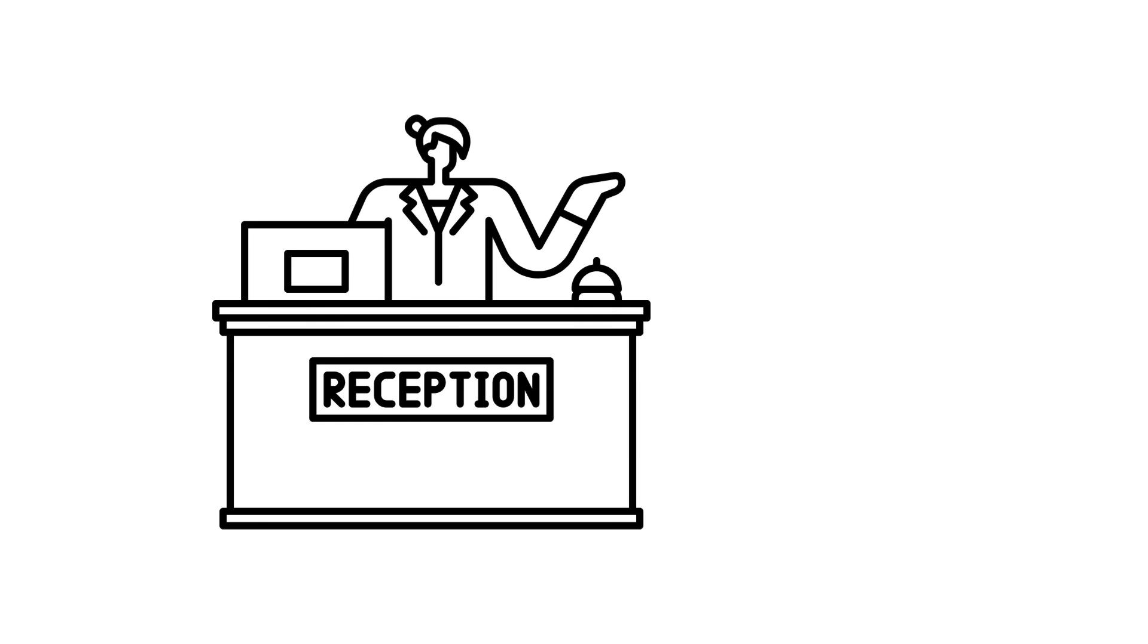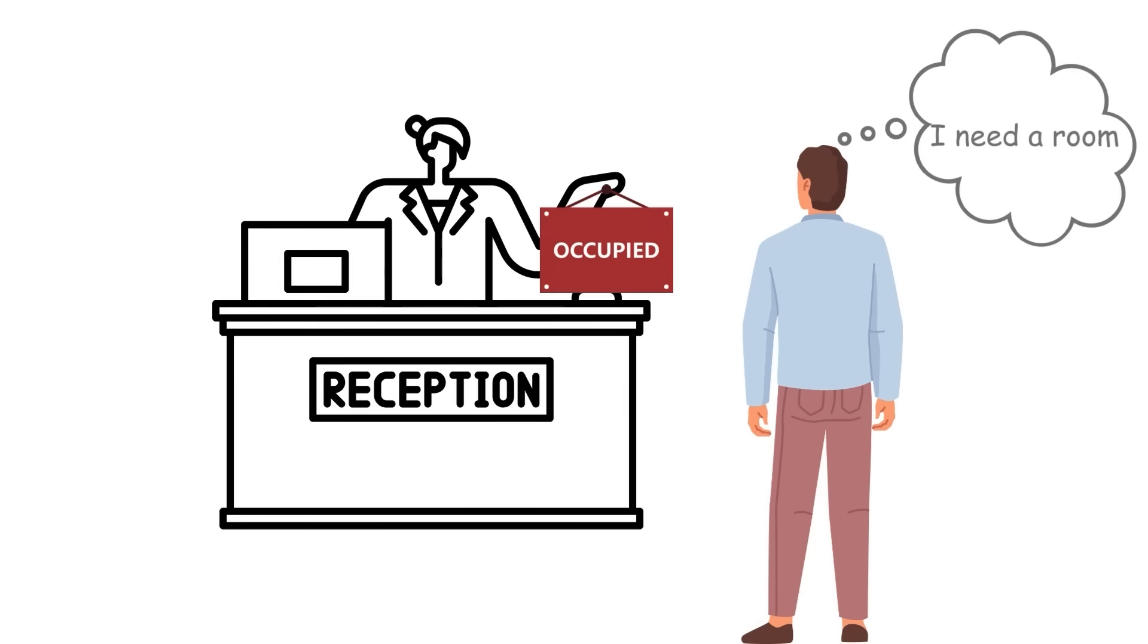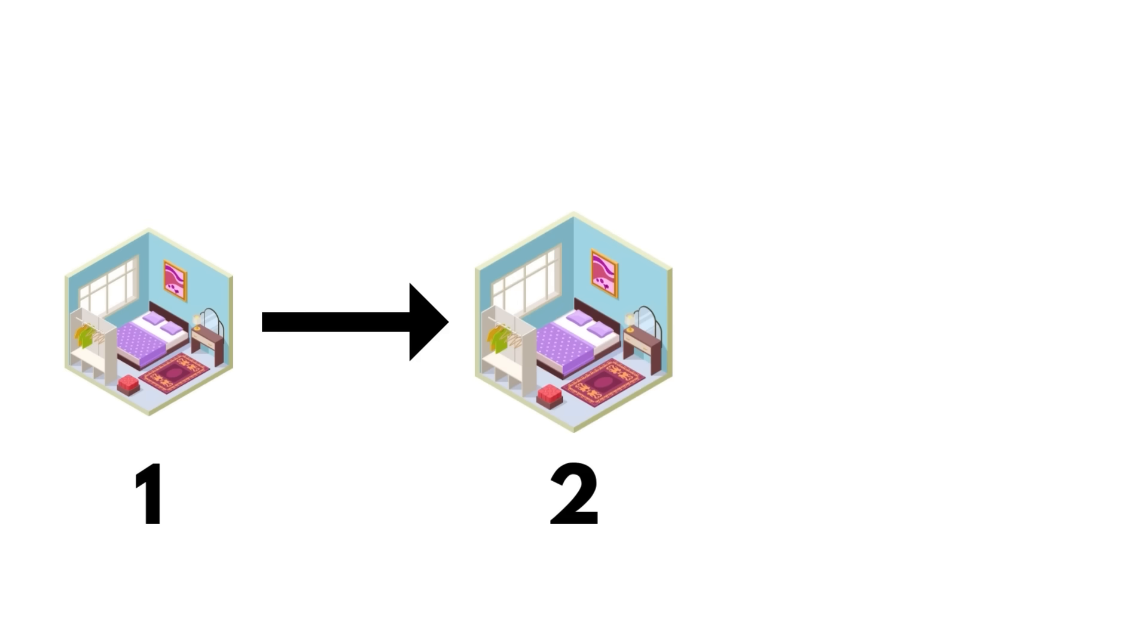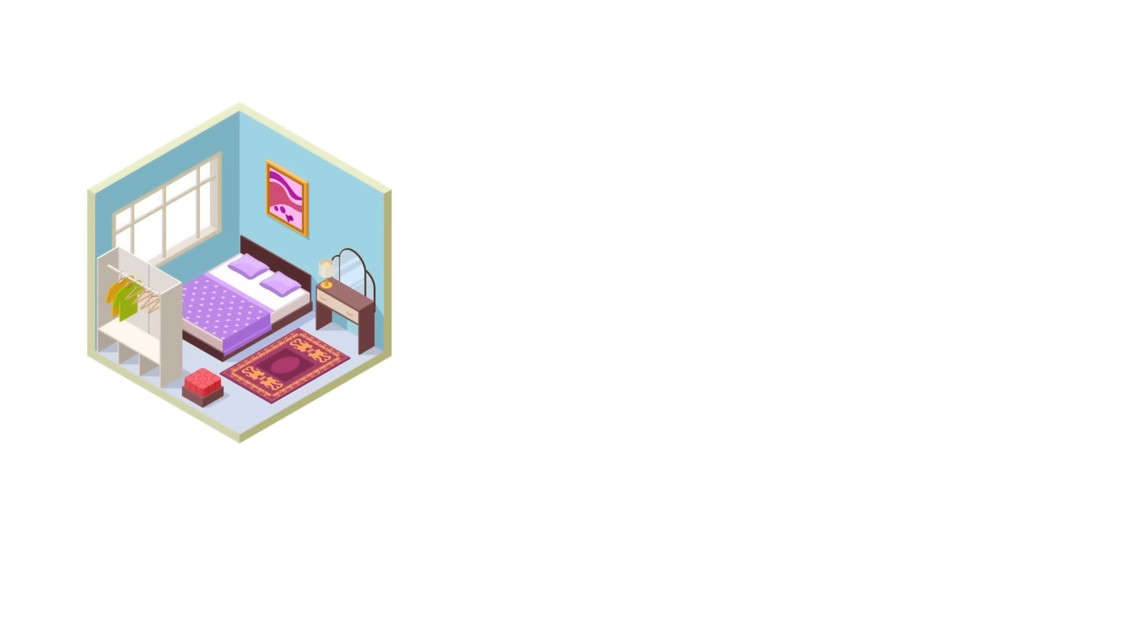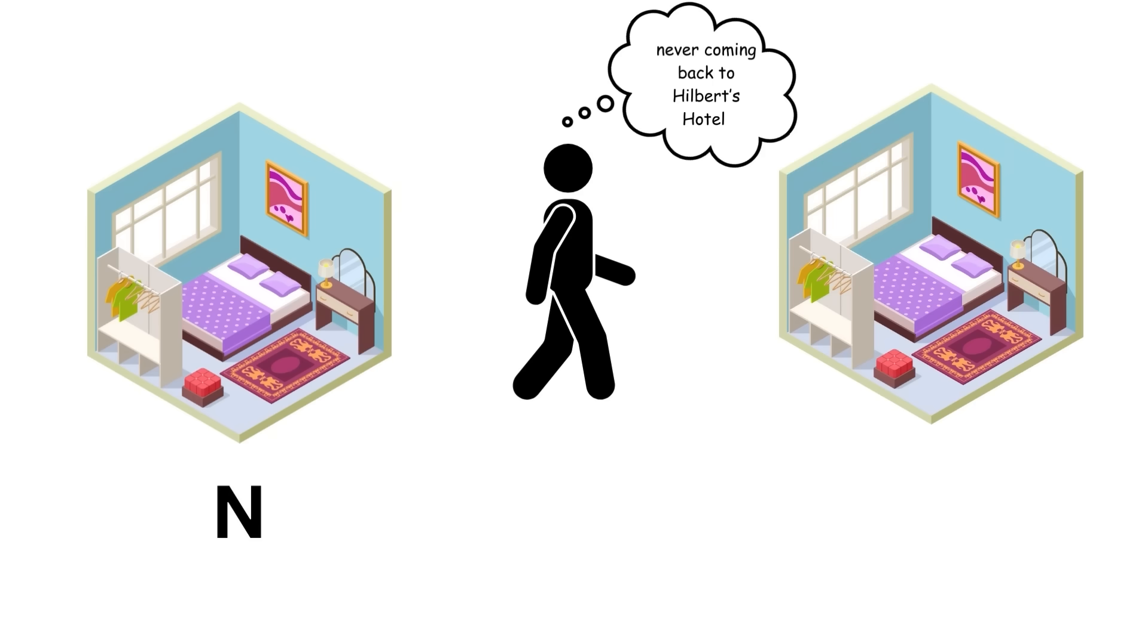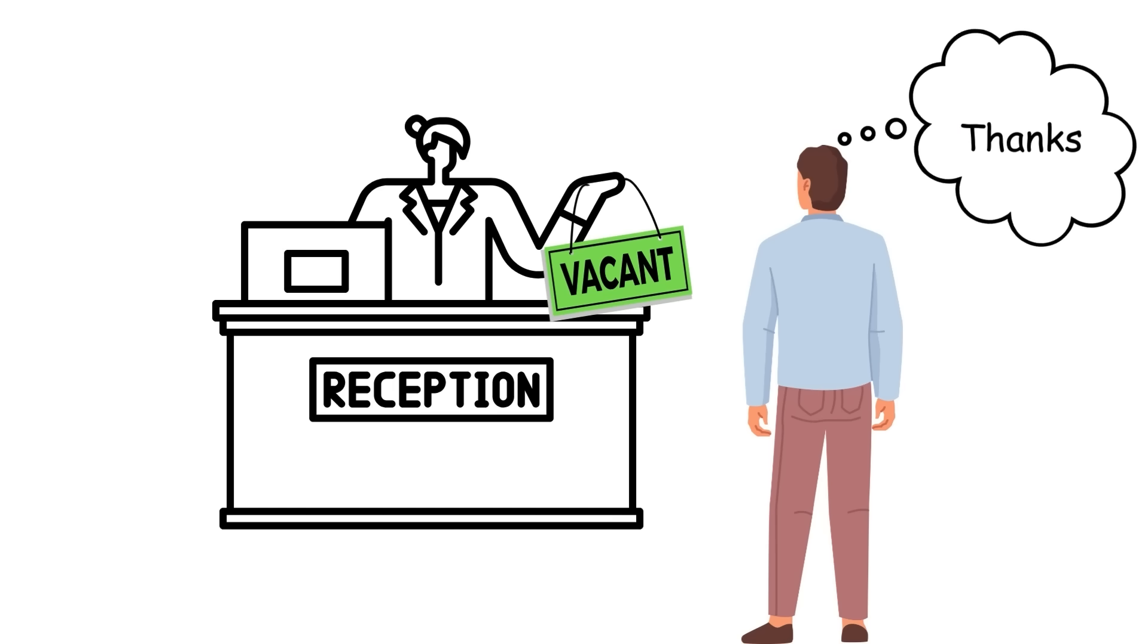The hotel starts out fully occupied. However, a new person shows up and wants a room. Surprisingly, you can accommodate the new guest without removing any current guests. The hotel simply moves the guests in room 1 to room 2, the one in room 2 to room 3, etc. In general, the guest in room N moves to room N plus 1. Afterward, room 1 is free for the new guest.